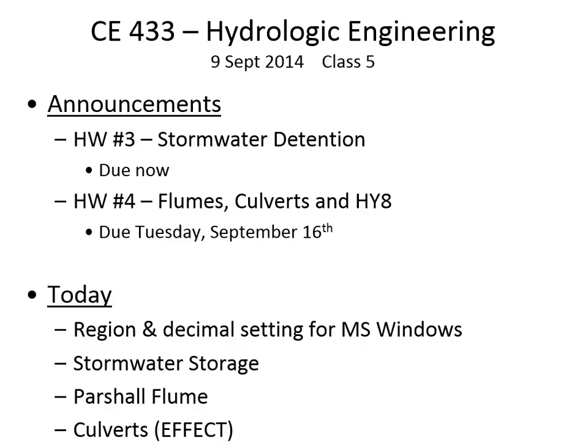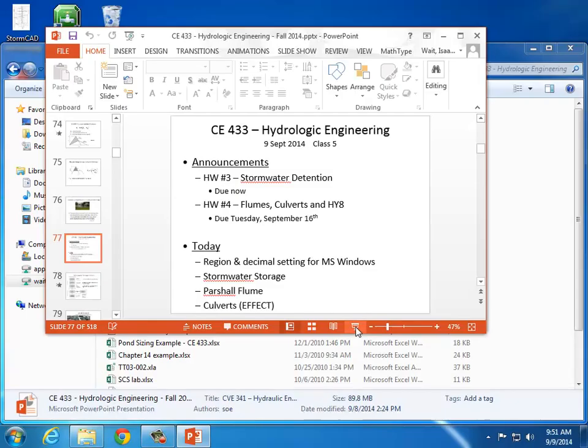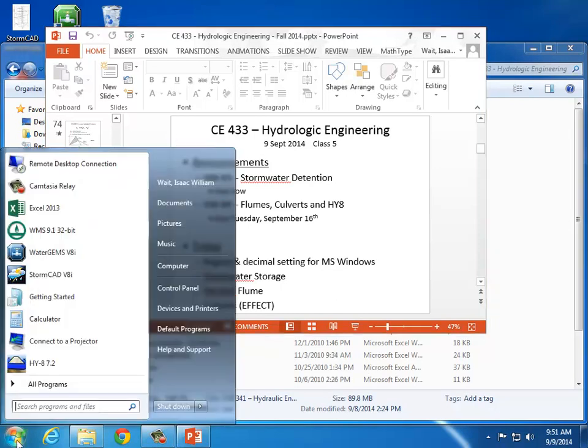I know a lot of you are from outside the U.S., and I think it might be useful if you consider whether to switch over the region and decimal settings for Windows, because there are commas where there should be decimals, and decimals where there should be commas. For example, if a pipe diameter is 1.00 feet, that's what it should say in an annotation. In some cases it's saying 1,00 feet. Let me show you — it's actually pretty easy to change that setting temporarily for submitting a homework, or maybe for the entire time that you're in the U.S.